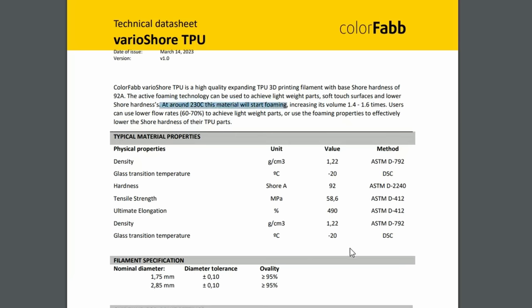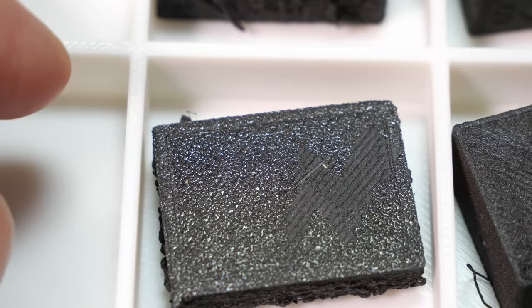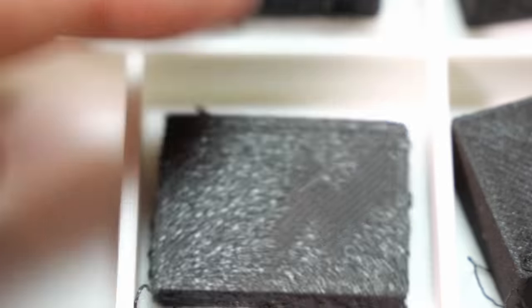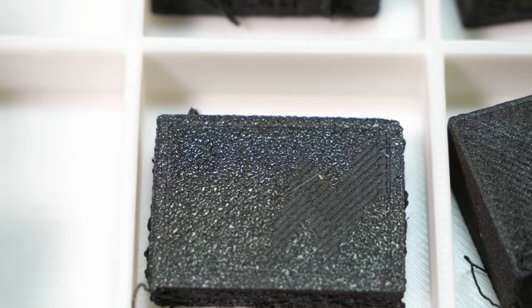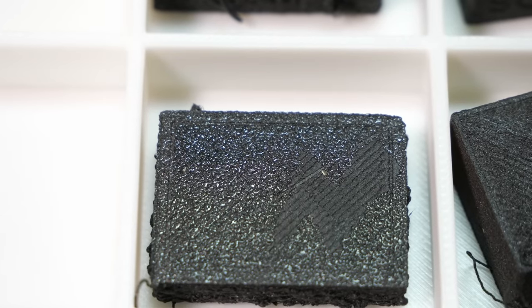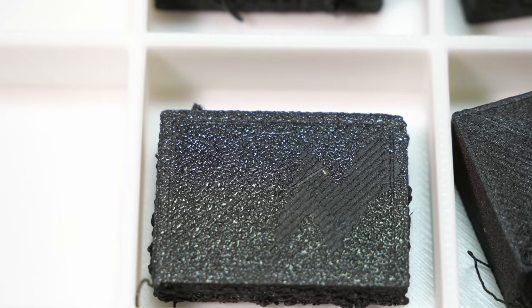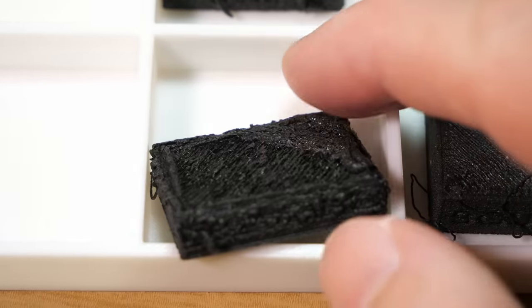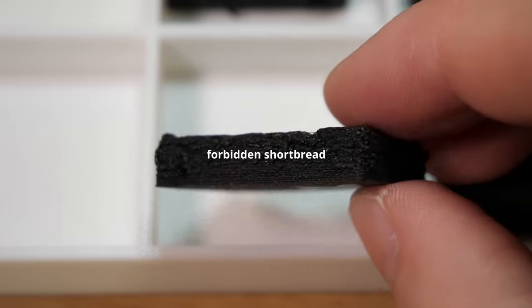At 230C onwards, the stuff foams which means its volume increases by 40-60%, which is quite a lot. If you think that through, it's not obvious at first what you would do to leverage that ability, because why would you want your part to be 40-60% bigger? I'll show you a half printed block that's 40-60% bigger. I had to stop this to save the machine from getting TPU all over the nozzle. This is not really ideal, is it?